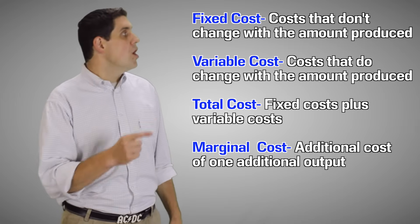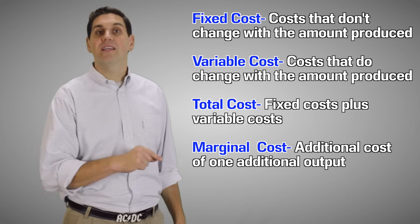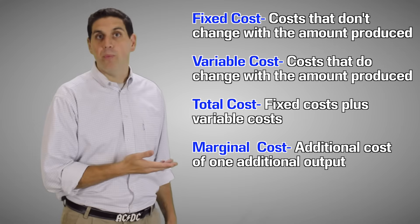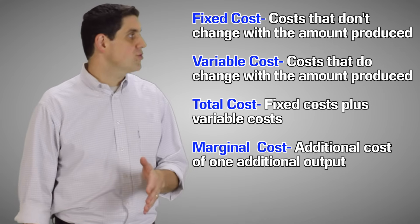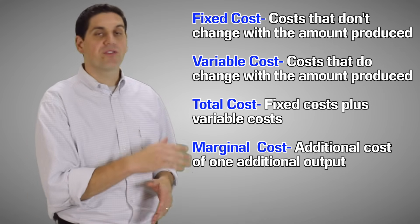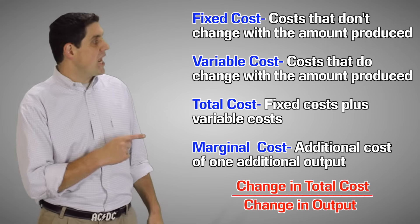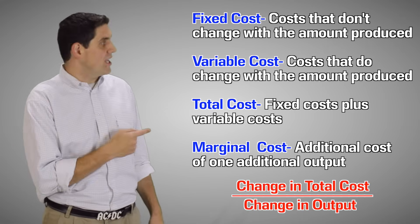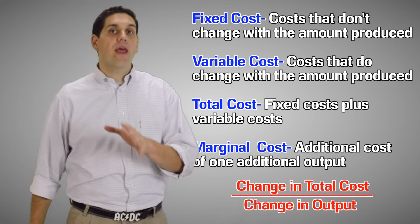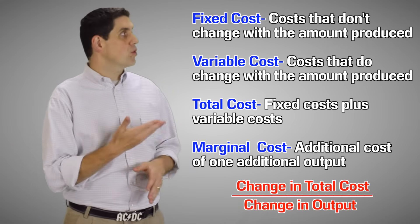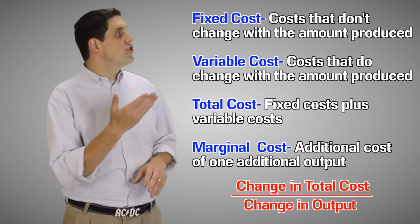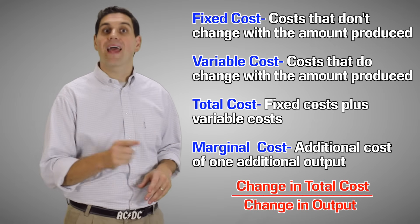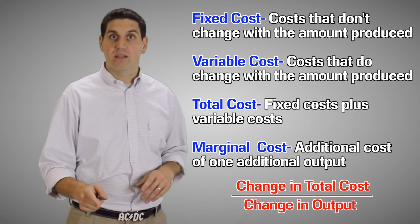And there's also marginal cost. Marginal cost is the additional cost of producing one more output. If you're a pizza restaurant, it's the cost of producing one additional pizza. It's the change in total cost divided by the change in output. So now you understand the total cost: there's total fixed cost, total variable cost, total cost, and marginal cost.